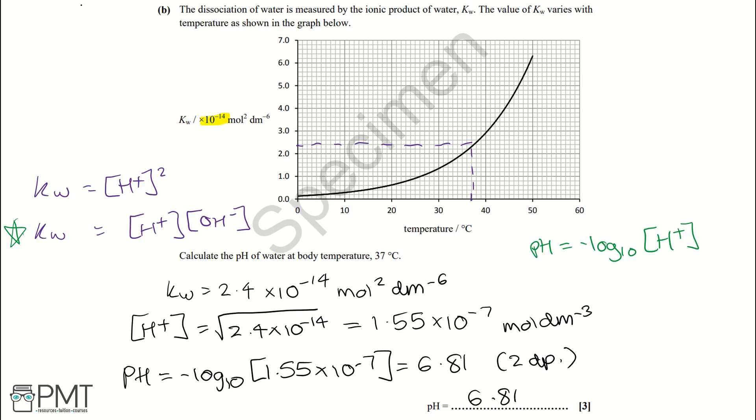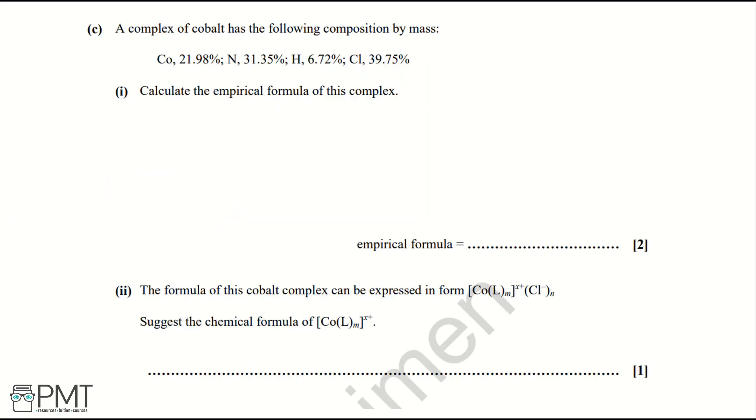To get the marks for this question, you get a mark for correctly reading off your Kw value from the graph, so that can be anywhere between 2.2 and 2.4 times 10⁻¹⁴. You get a mark for then working out your concentration of H⁺ correctly, so rooting this and getting 1.55 times 10⁻⁷ if you use 2.4 times 10⁻¹⁴. And then you get your third mark for correctly working out pH, so in this case that would be 6.81 to two decimal places.